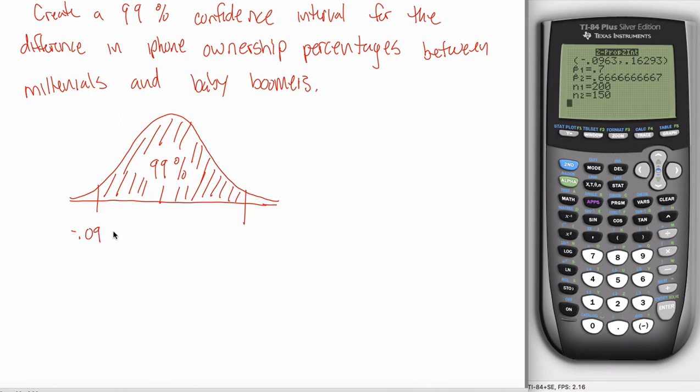So I got negative 0.0963 and then I got positive 0.1629. So they're both rounded to four decimal places.